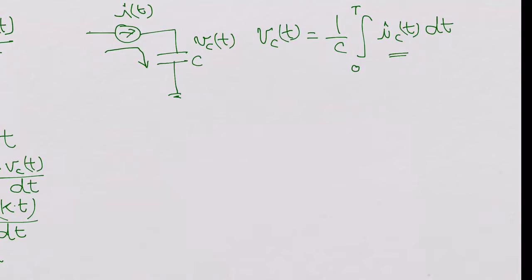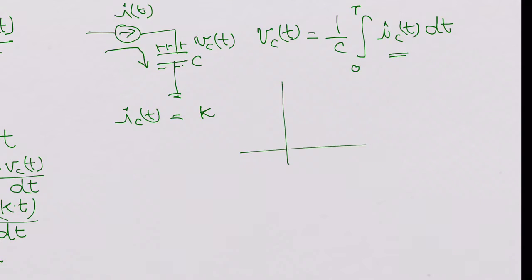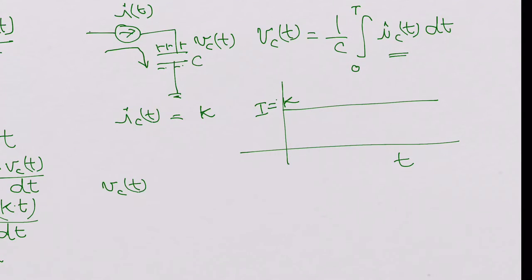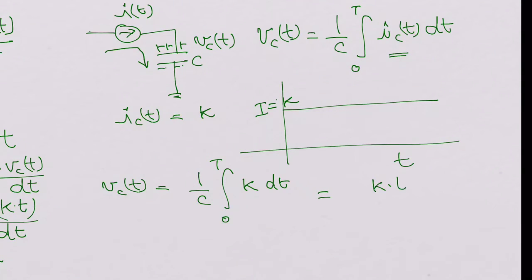What this means is: if you continuously force a current into the capacitor, the voltage across it would keep on increasing — there is no limit, it keeps increasing. Now let's assume IC of T is a constant K. You force a constant current K into the capacitor. Then VC(T) = (1/C) × integral from 0 to T of K dT.